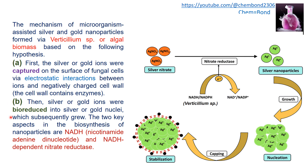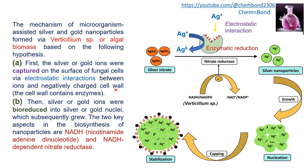There is a two-step process: first, silver or gold ions are captured on the surface of fungal cells via electrostatic interaction between the positive metal ions and the negatively charged cell wall. This electrostatic interaction draws the silver ions toward the fungal cell.